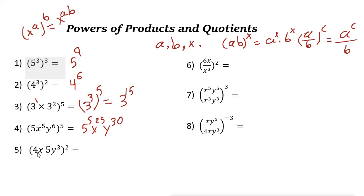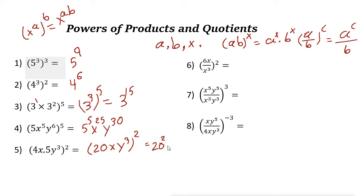Next example: (4x · 5y^3)^2. First multiply the coefficients: 4 times 5 is 20, since they are different bases we can't use exponent rules directly. So we get (20xy^3)^2, which equals 20^2 · x^2 · (y^3)^2. That gives 400 · x^2 · y^6, since 2 times 3 is 6.